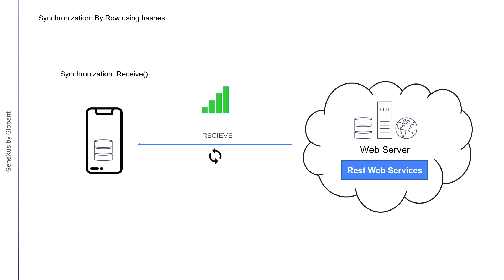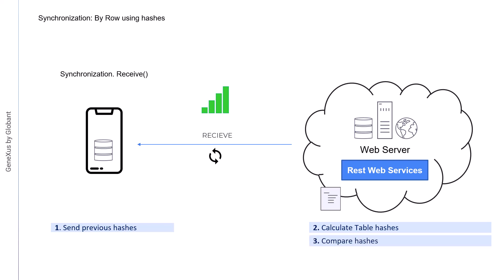On the other hand, the disadvantage of this mechanism is that it requires more processing on the server side, especially for large volumes of data. First, the device sends the table hashes to the server, just like in the synchronization by table. The server determines the data set that must be in the device according to the filters that may exist, and then it calculates a hash for each data set. Then, the server compares the new hashes with the current ones and determines which ones must be sent to the device.